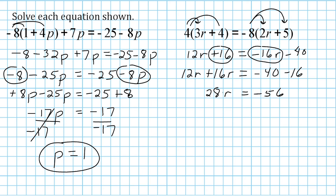To isolate the variable, we divide by the coefficient. 28r divided by 28 is 1r, and negative 56 divided by 28 is negative 2. So r is equal to negative 2.